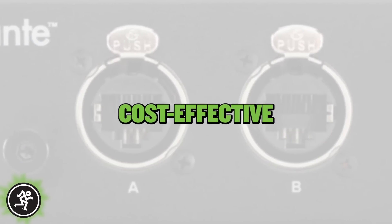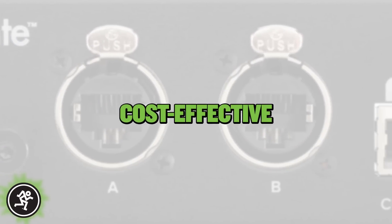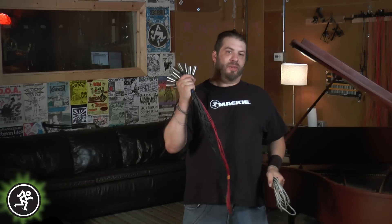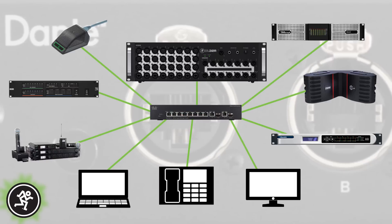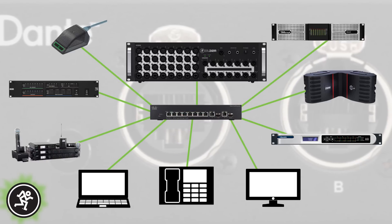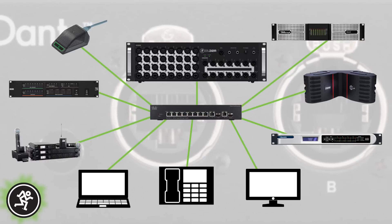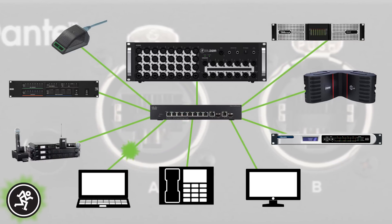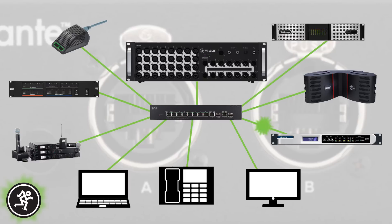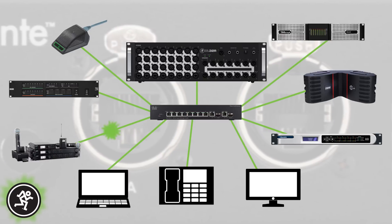And last, but definitely not least, Dante is extremely cost-effective. Since a single Cat5 cable can carry all of your DL32R's inputs and outputs, there's no need for expensive analog cable runs, meaning installation takes less time and saves you money. And, as long as all of your devices are connected to the same network, audio signals can be sent into and out of your mixer from virtually anywhere.